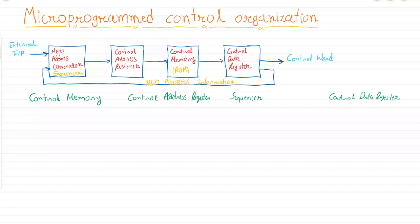Now let us try to understand the individual components and how everything works together. We will focus on the sequencer or next address generator later on. Let us start with the control address register. We have already discussed that the micro program control unit contains the control memory.